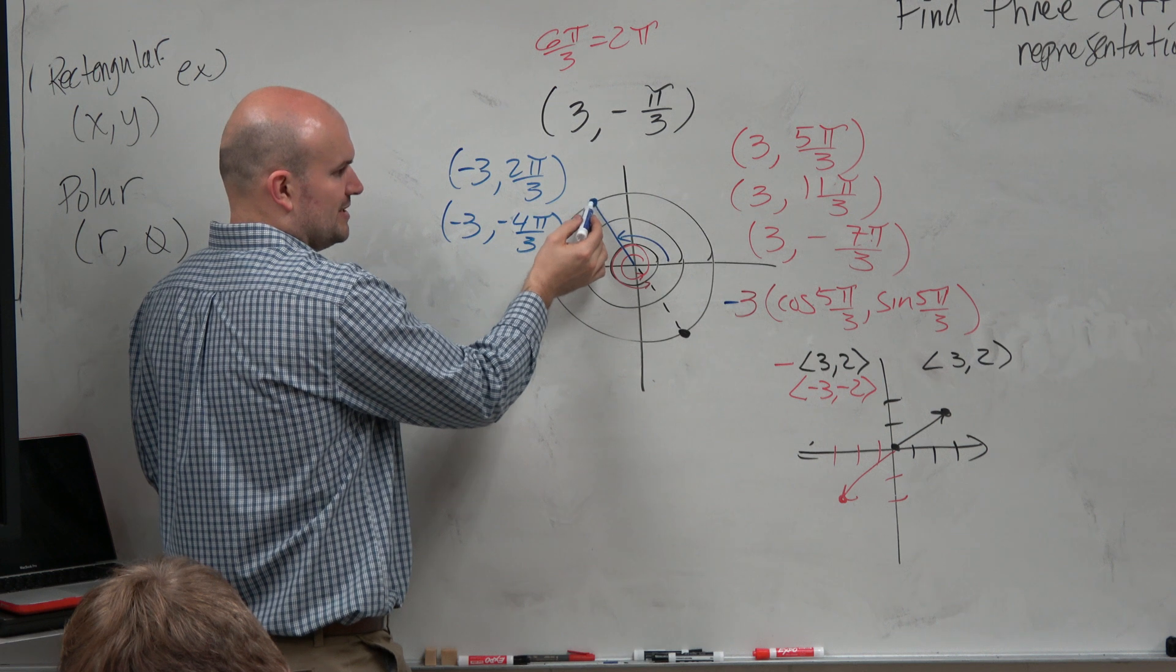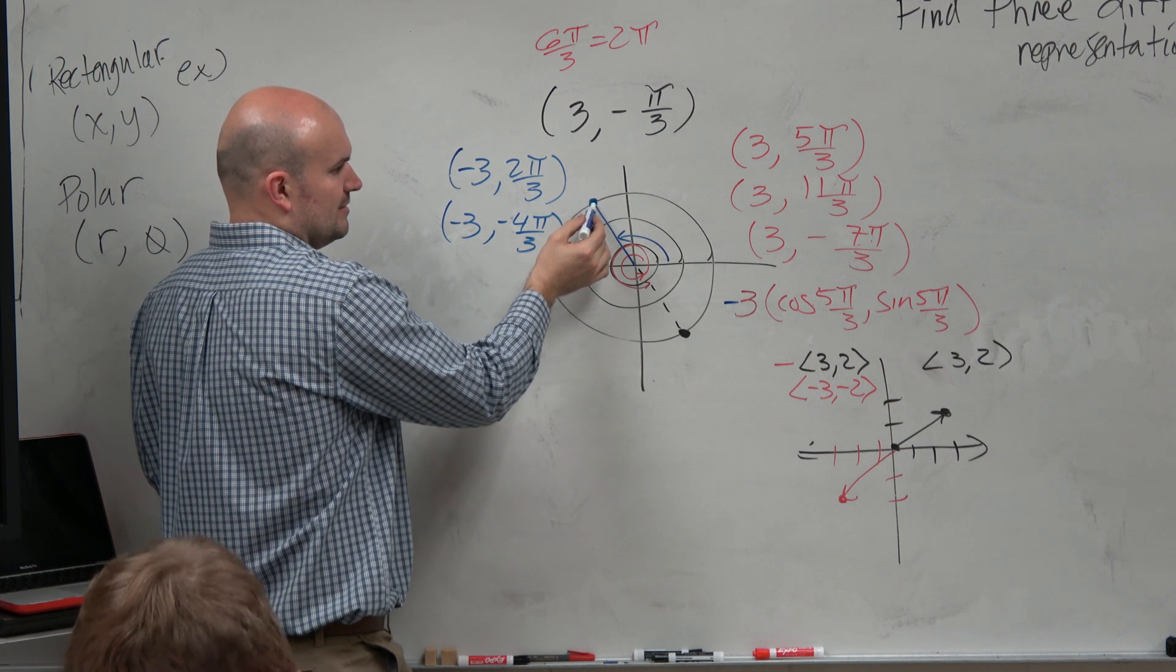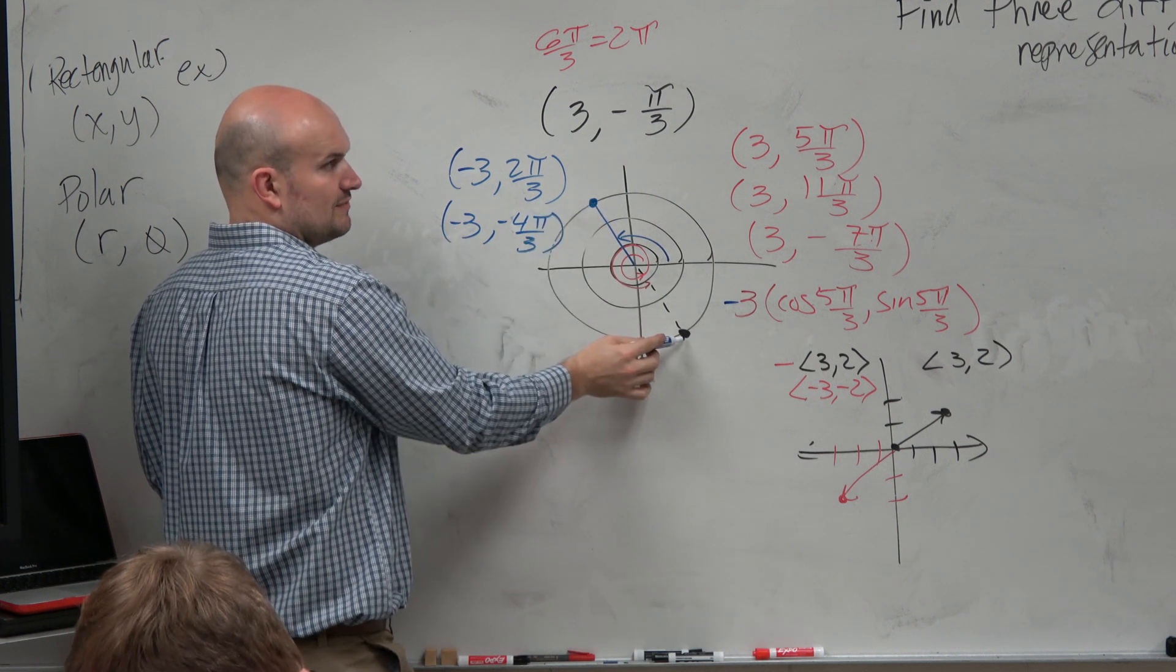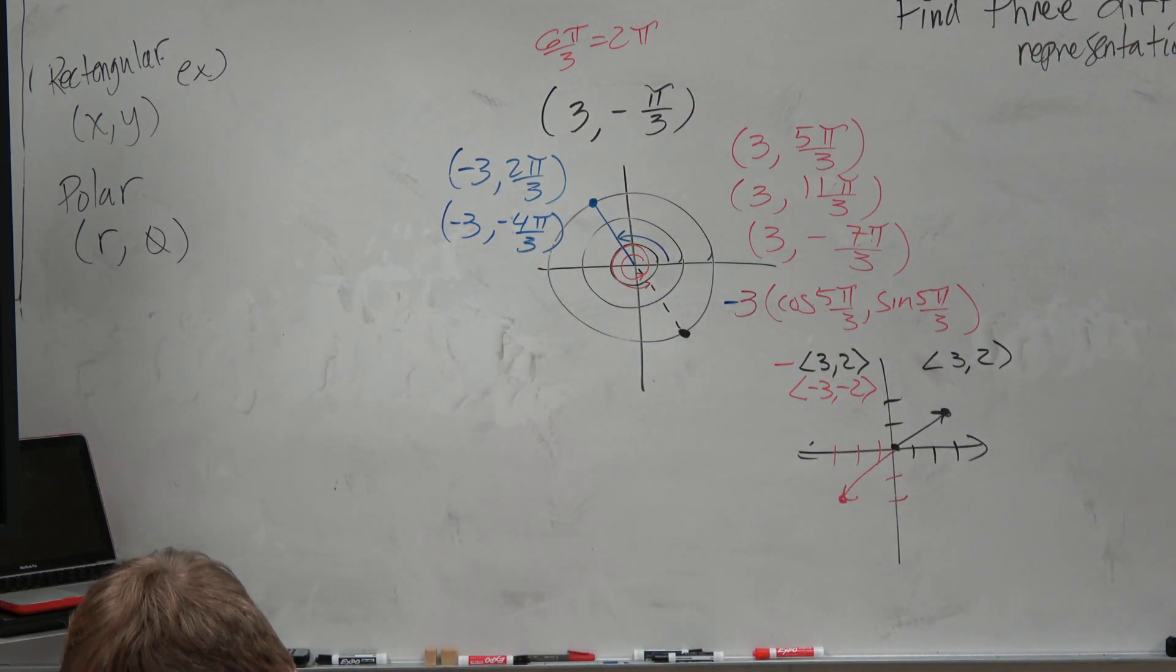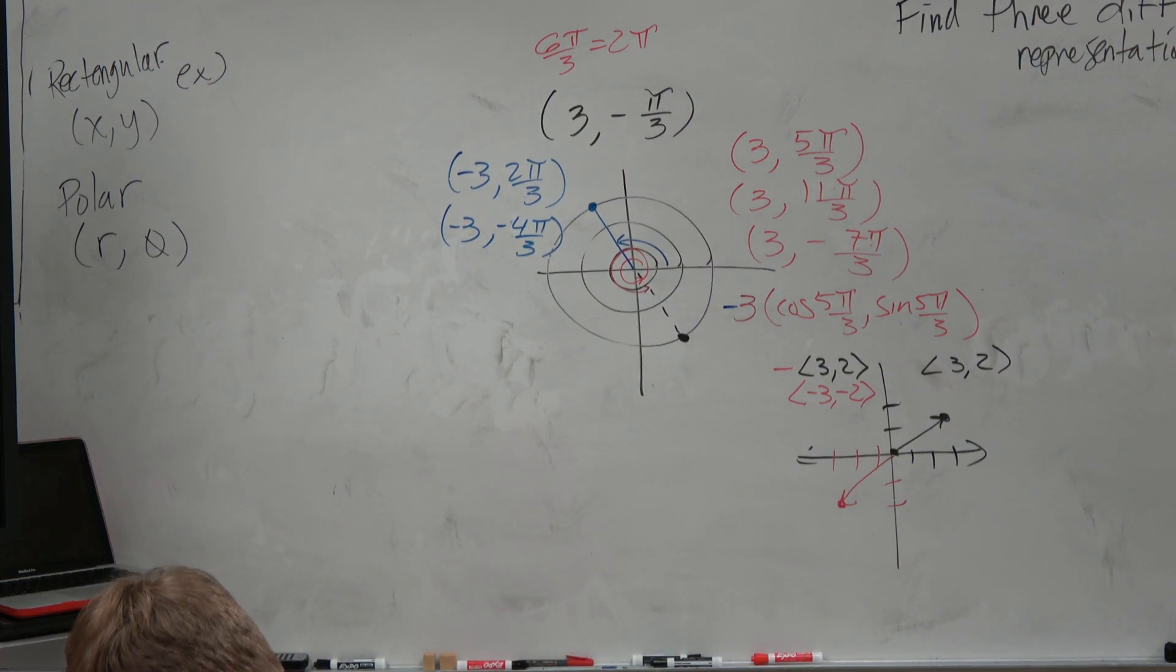So again, think of it as negative 4 pi over 3, 3. And then the negative reflects it over. All right? Now, to give you guys a little bit of comfort, this is confusing.